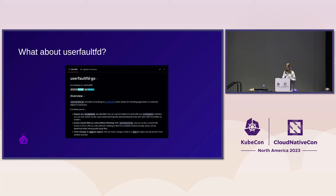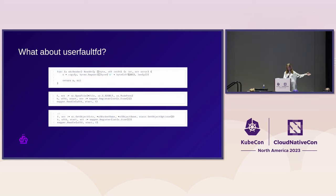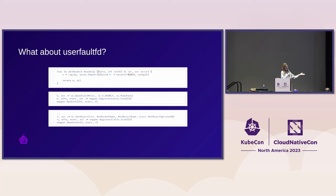One of the more universal approaches to remote memory is userfaultfd — a kernel API that allows you to essentially stream in memory as you're accessing it, enabling post-copy migration. We built an open source library for Golang called userfaultfd-go with very simple bindings. The interface exposes the resource as an io.Reader, which is probably what everyone's ever written. You register it on a byte slice and when you access individual bytes, it fetches them from the remote.